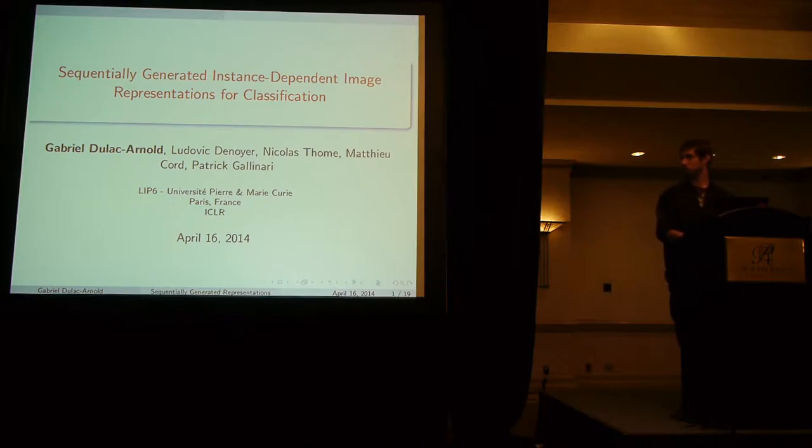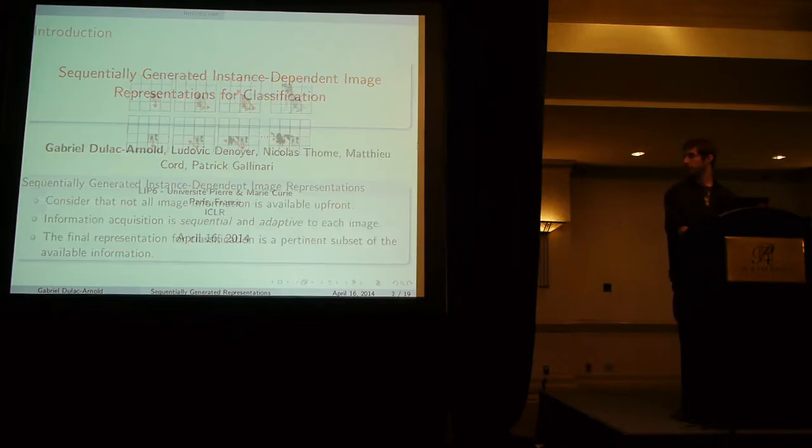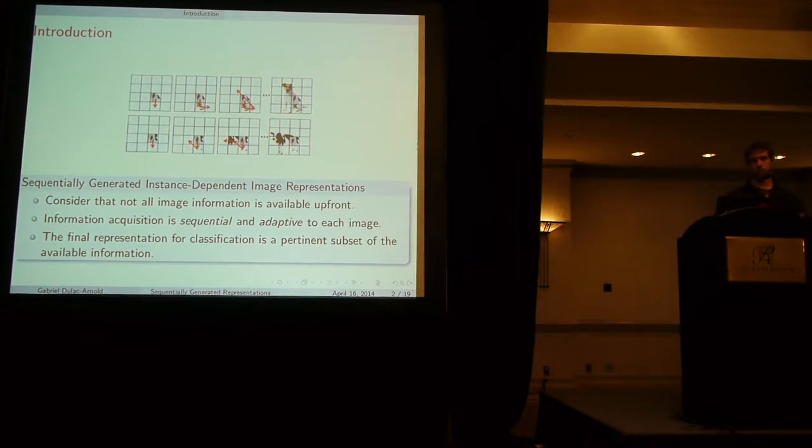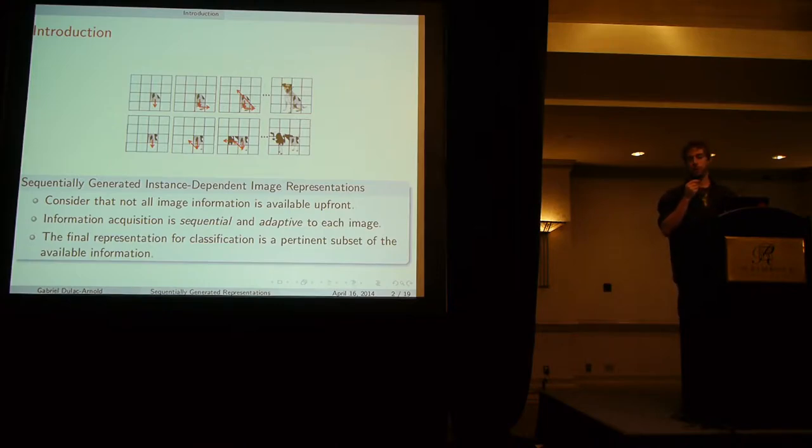So the point here is to sequentially generate image representations that are well-adapted for classification. This is a different vision of representations than what you get in terms of latent representation. The goal here is that you're going to have a classifier that not only learns to classify images but learns to acquire the information on its own.